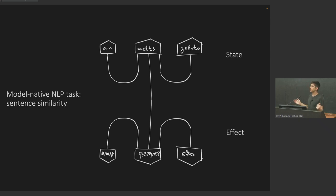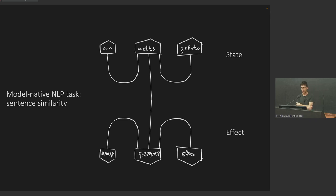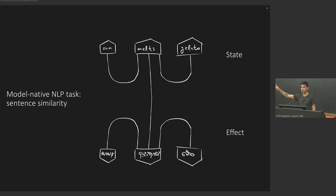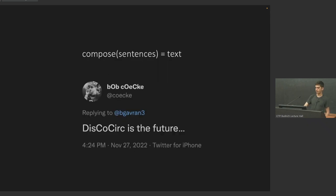That meaning flows on the sentence-type wire. The first obvious model-native NLP task is checking how similar two sentences are. For example, you take one sentence — 'sun melts gelato' — as a state, and take an effect which is some other sentence upside down — 'monk dissolves ego'. Maybe 'melts' is similar to 'dissolves' but the nouns are quite different, so this whole thing will have some overlap. I can't evaluate my overlap yet — this is just the shape, a blueprint — but this is how I build my model.